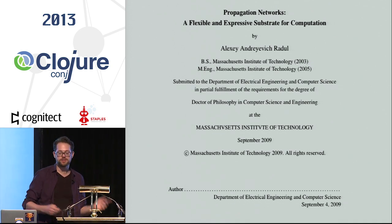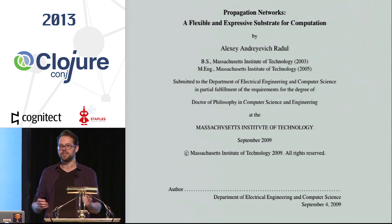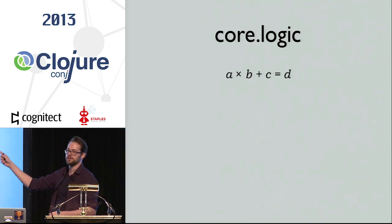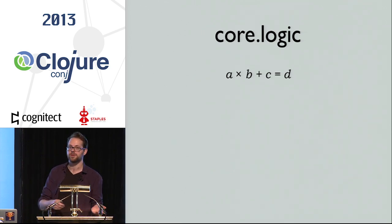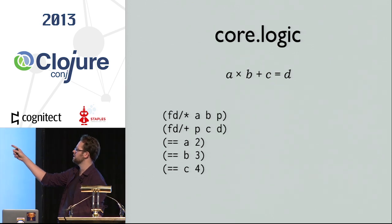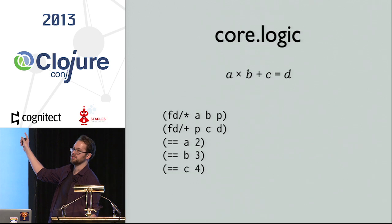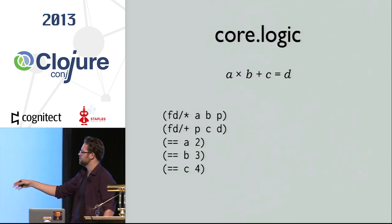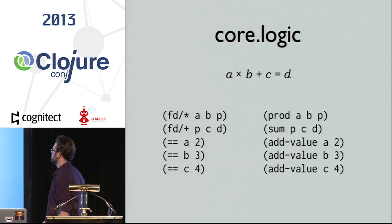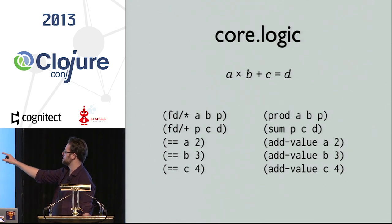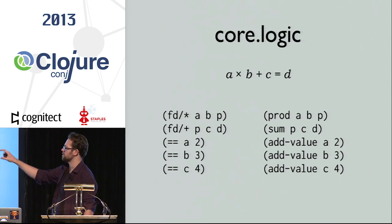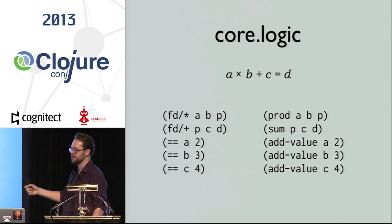Let's jump into what propagators actually are by looking at something you already know. We're going to look at this relation in both CoreLogic and in Propaganda, the propagator library I've released for Clojure. In CoreLogic, you use finite domains and state that a logical variable P should be the product of A and B, and the sum of P and C should be D. In Propaganda, the semantics are almost the same — you state the product of A and B should be P, the sum of P and C should be D, then add values to these placeholders. It's declarative, so the order of these expressions doesn't matter — you're just setting up constraints.